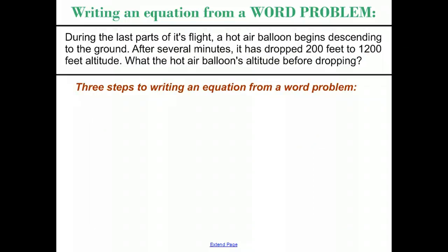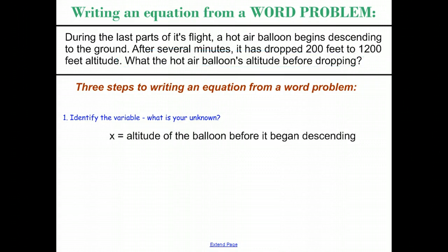Well, there are really three steps that we have to writing an equation from the word problem. And if you follow these three steps, you'll be able to write an equation from nearly any word problem you come across. First is identify your variable. What is your unknown? What are we trying to find? Because if we write an equation from a word problem, we're really looking at solving for some unknown value. Our unknown value in this case is what is the hot air's altitude before dropping? So our variable, which we'll say is x, represents the altitude of the balloon before it began descending. So in anything that we talk about with this word problem from now on, we know that when we talk about the original altitude of the balloon, it's going to be represented by this variable x.